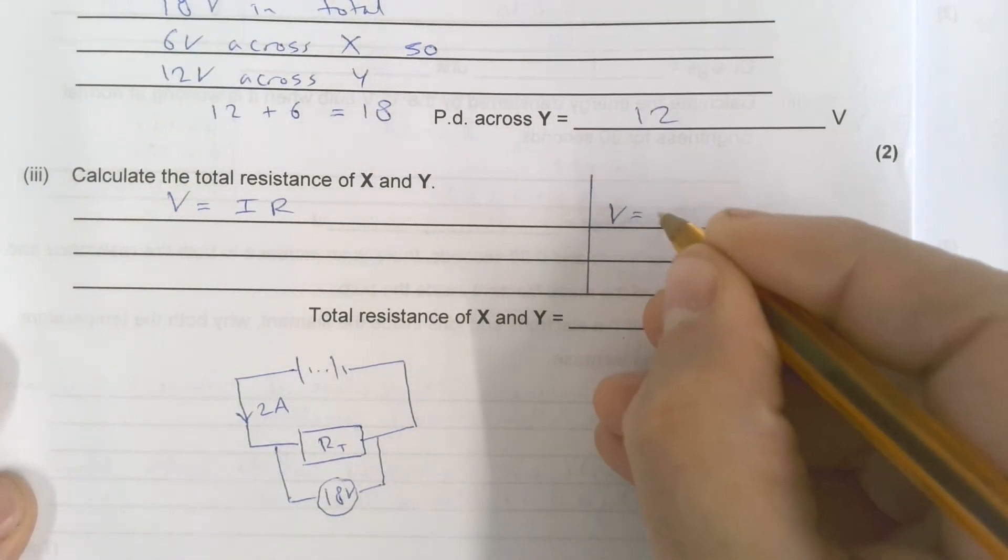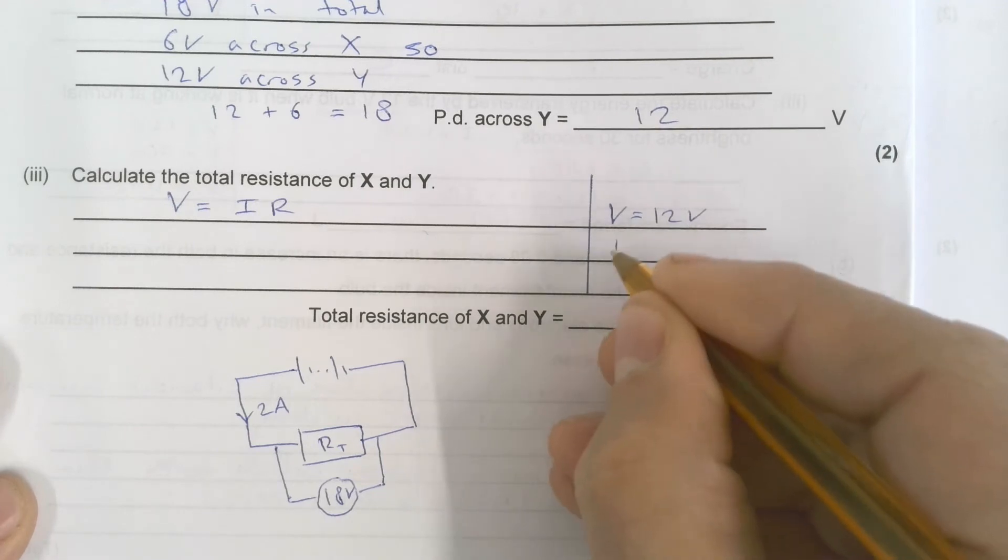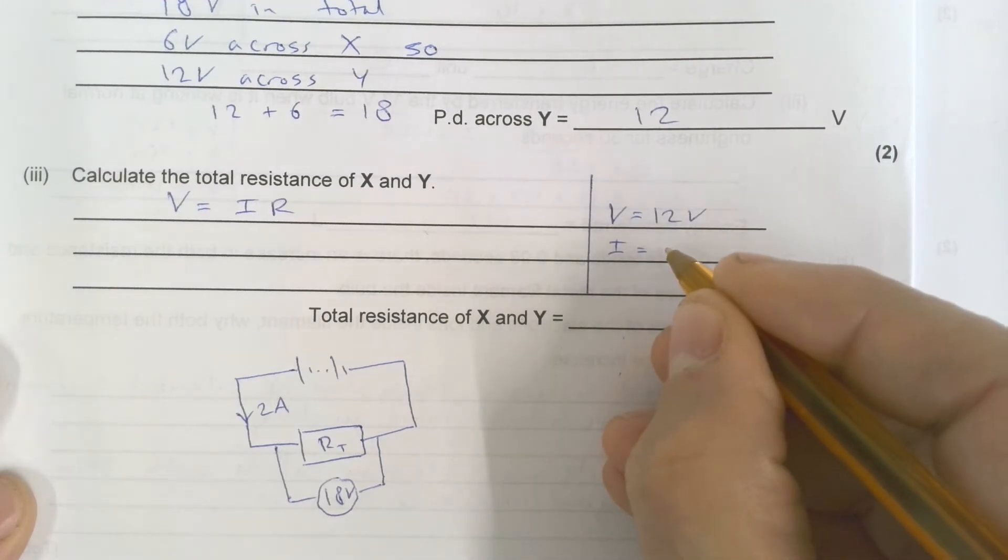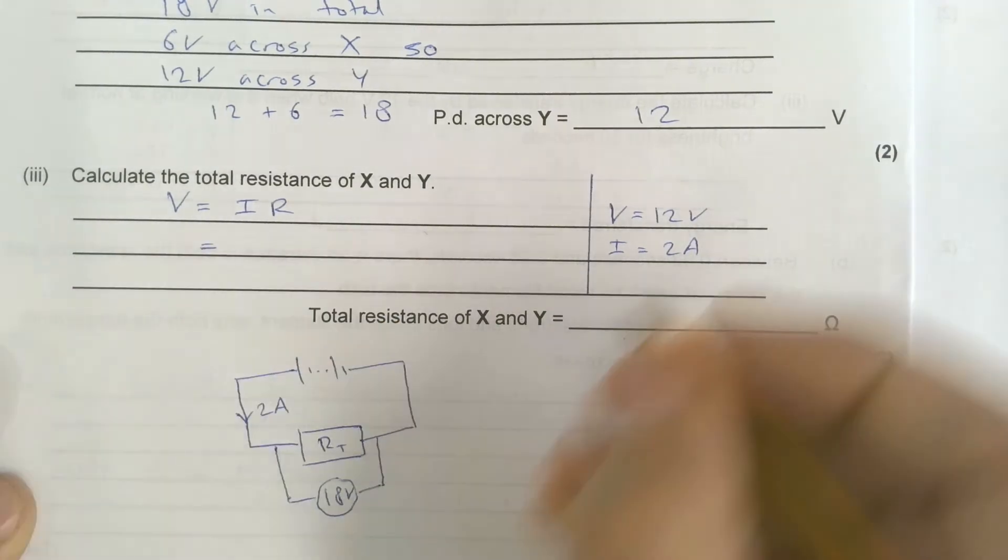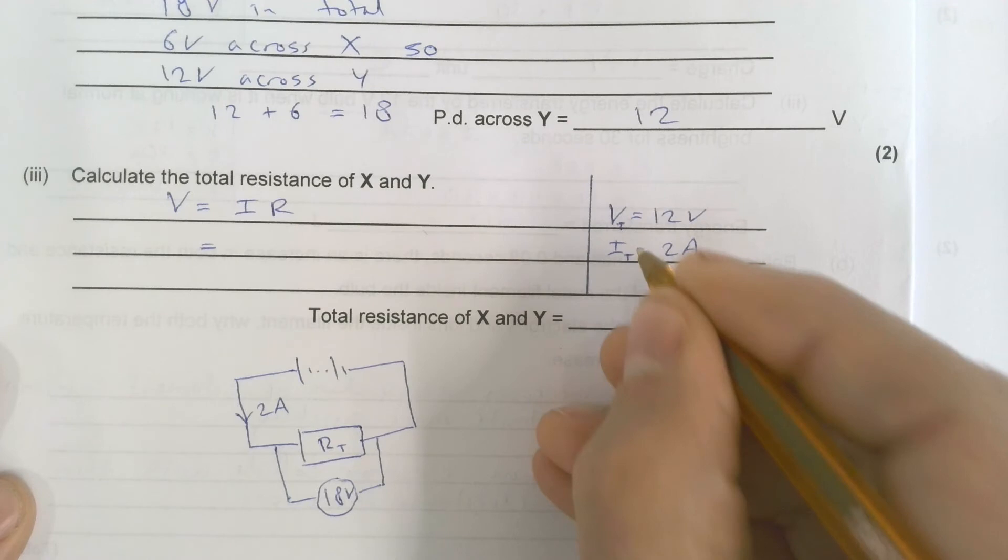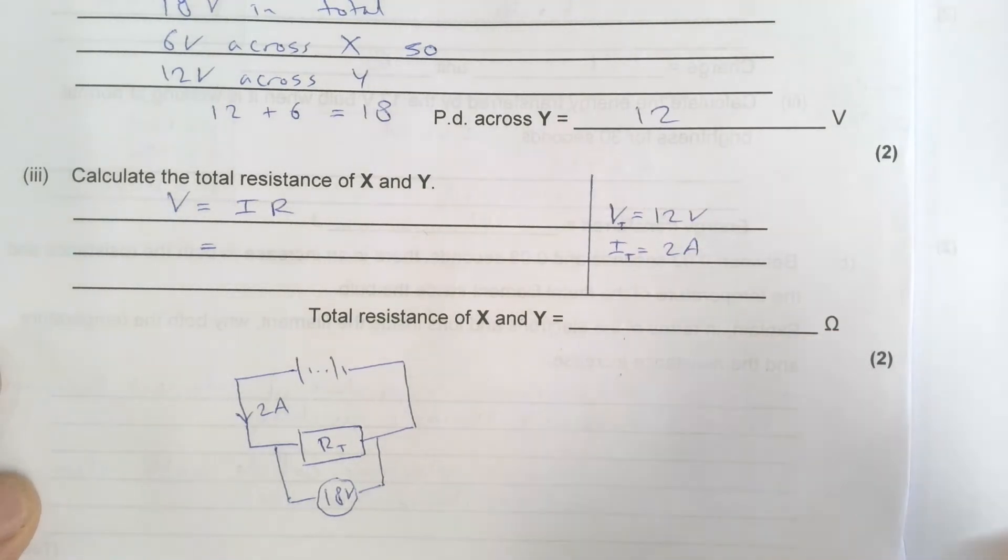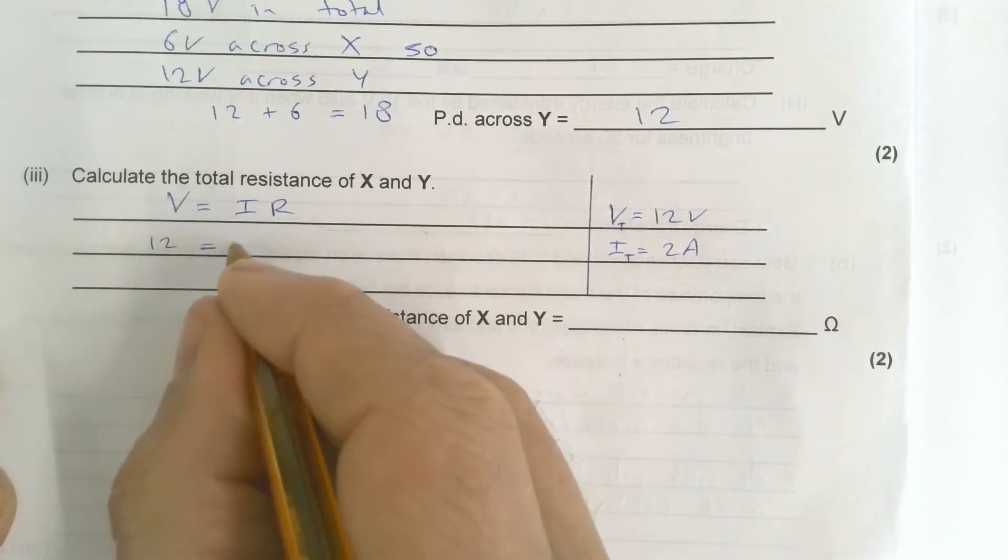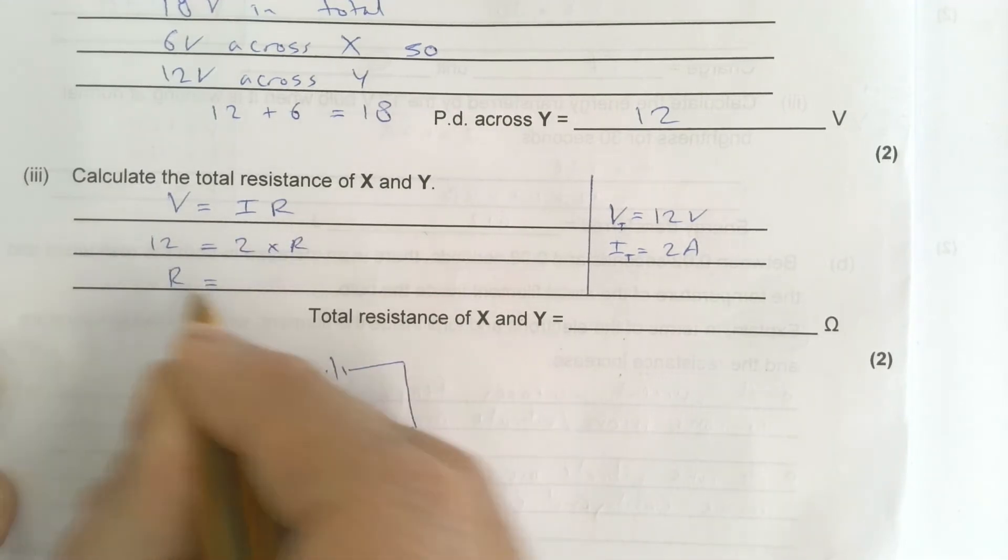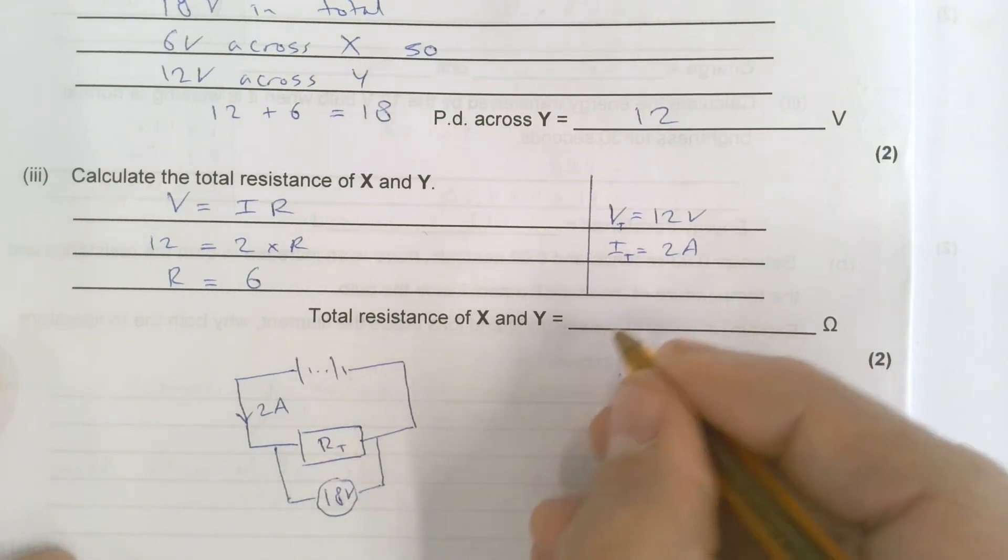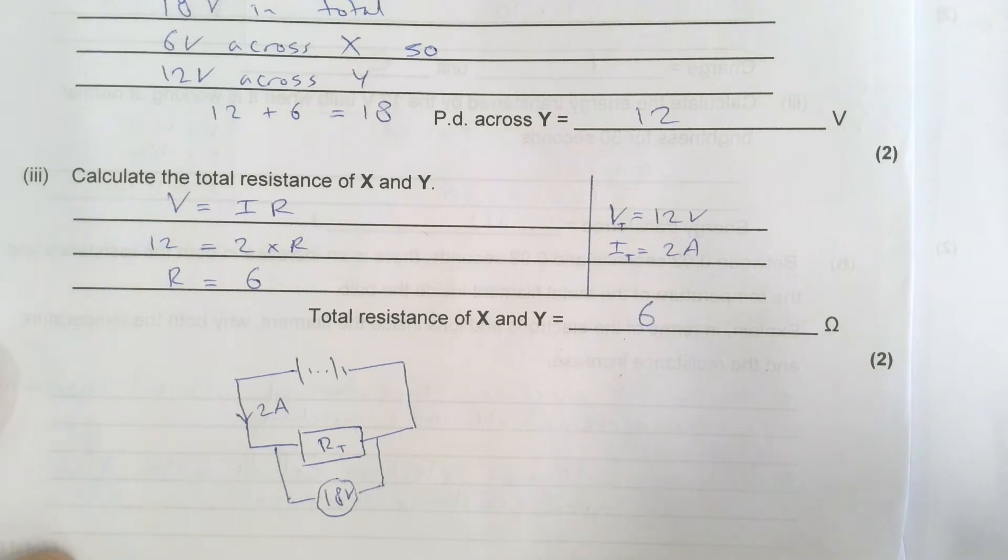So I know V, potential difference. So V is equal to 12 volts. I is equal to 2 amps. So I'm going to pop those in there. If you like, I'm going to put a VT for total. IT for total. You don't have to. 12 is equal to 2 times R. R is equal to 6. So total resistance of X and Y is 6 ohms.